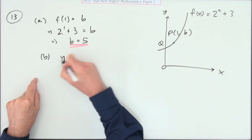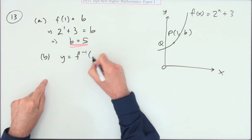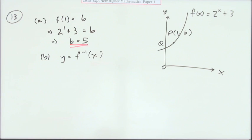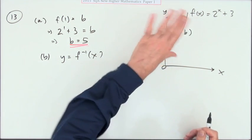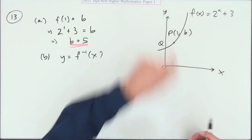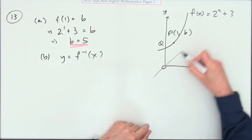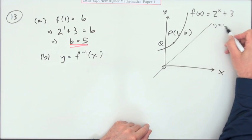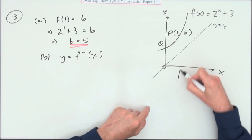Now for part b, you have to draw the graph of y equals the inverse function of x. Well that simply means changing the y's into the x's, the answers into the input numbers and the input numbers into the answers. You do that by reflecting it in the line y equals x, so it's going to end up looking like this.